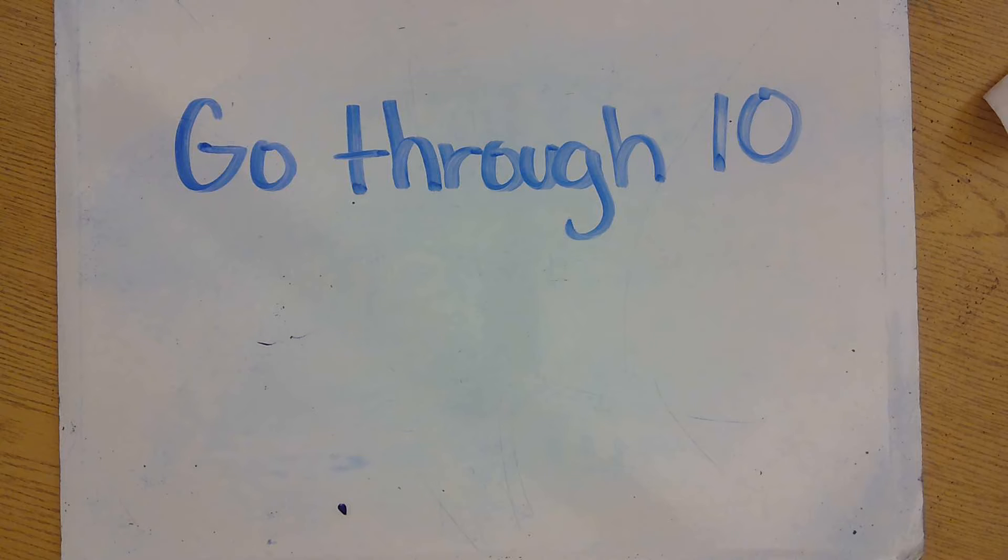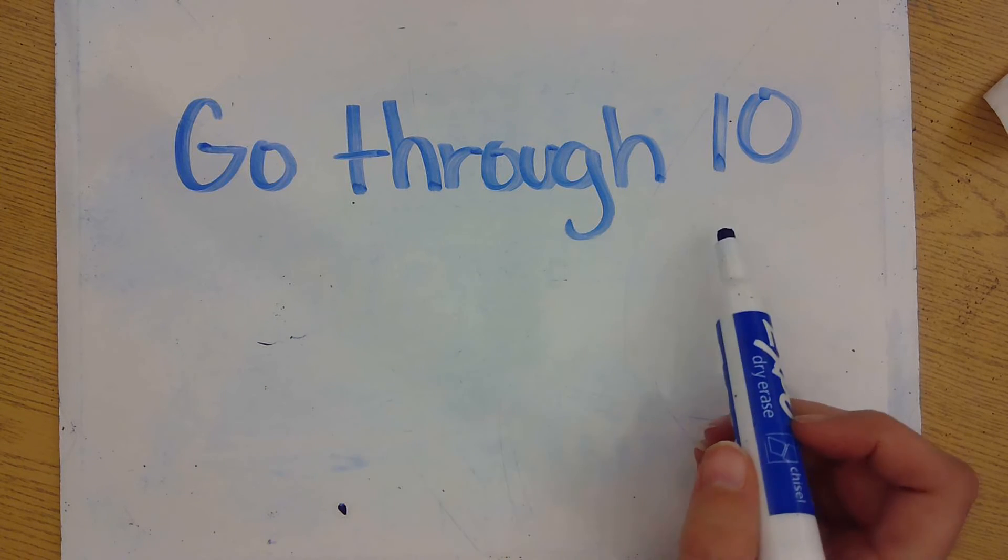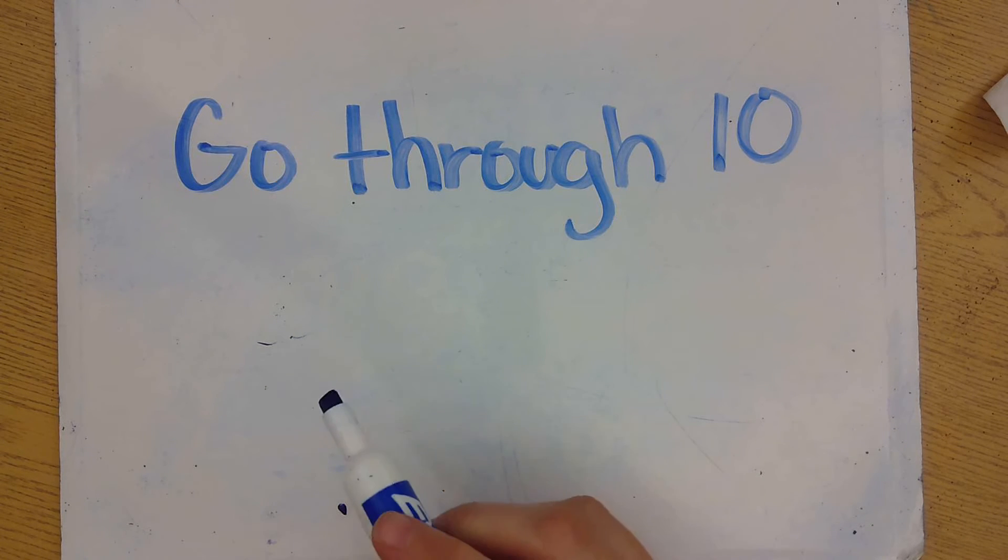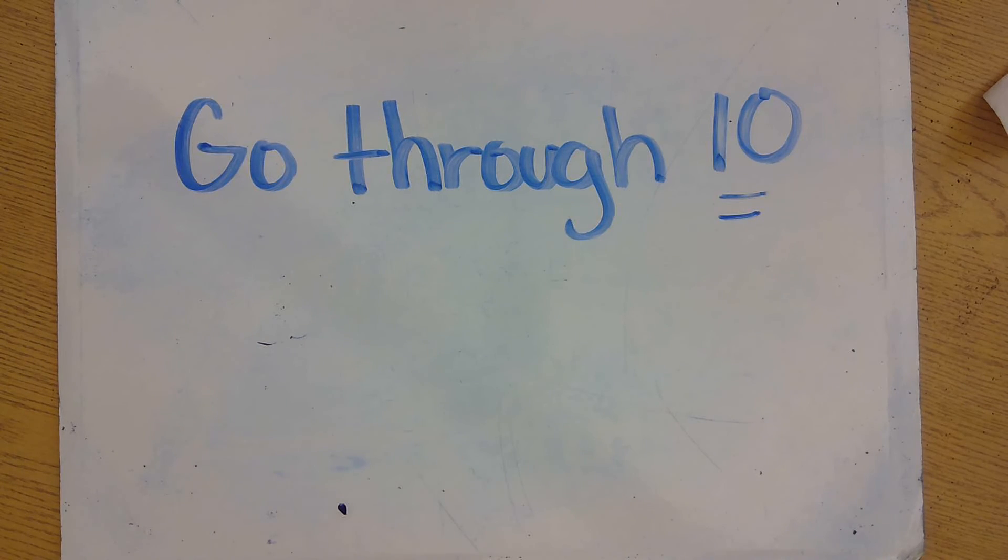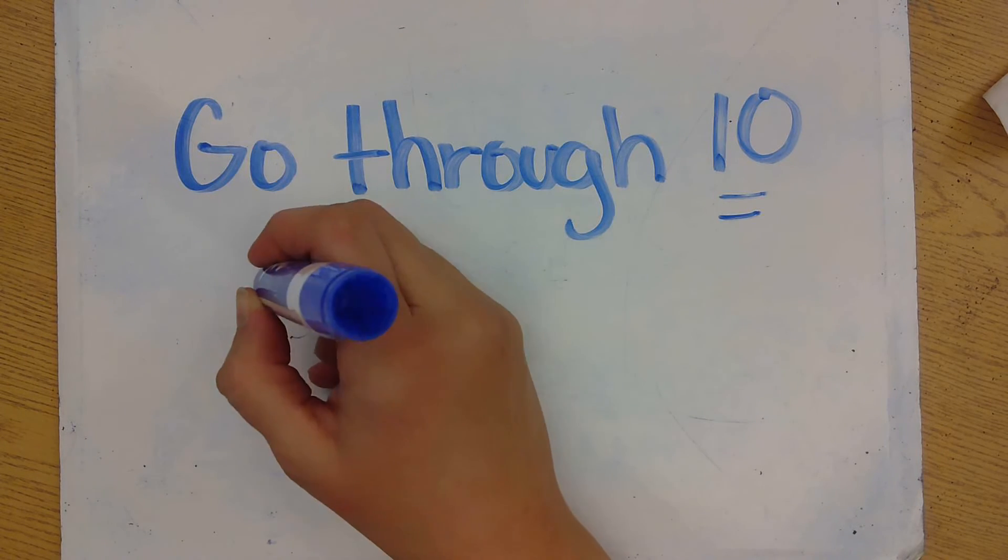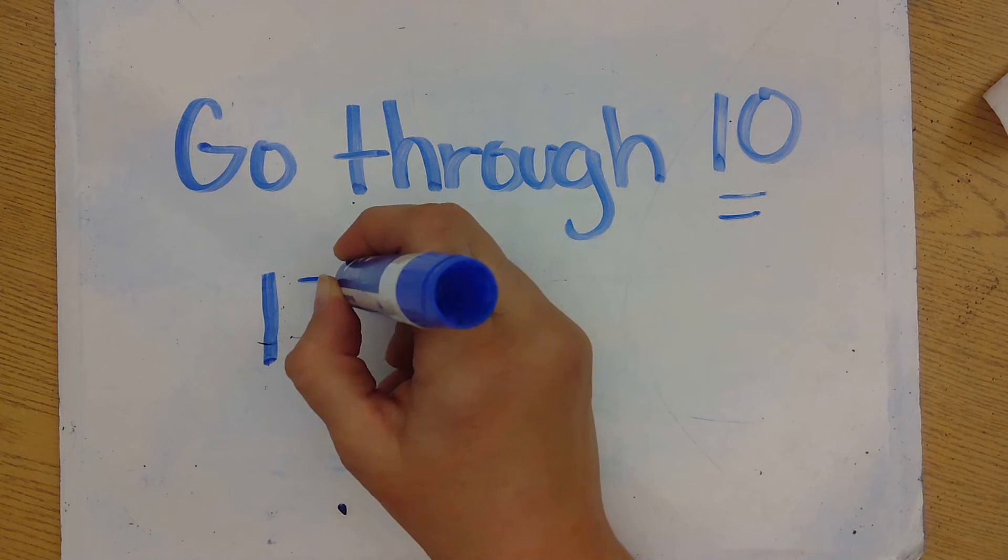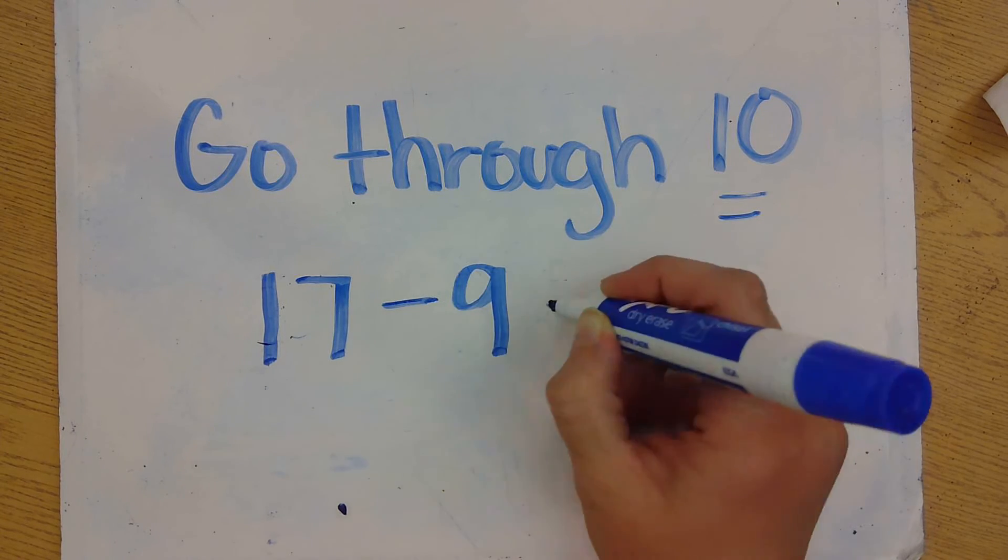Another strategy that we spent time thinking about was the going through 10 strategy. This is where we stop at a friendly number, like 10, to help us with our subtraction problem. So let's say that we want to solve this problem 17 minus 9.